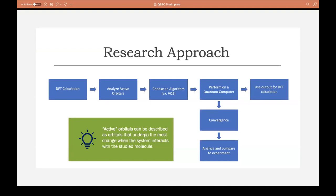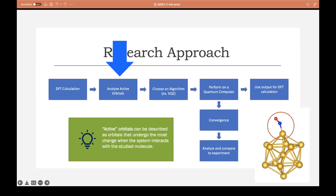The next step in this process, which is where I am now, is to analyze the active orbitals of the system. Active orbitals can be described as orbitals that undergo the most change when a cluster interacts with, oxidizes, or reduces the studied molecule. In the case of gold 13, we'll start by analyzing the orbitals of this gold atom that's connected to the nitrogen, the nitrogen atom, and the oxygen atom. Each of these active orbitals will represent a state on the quantum computer.